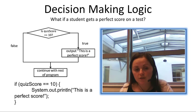What this would look like in code is: if quiz score equals 10, system.out.println, 'this is a perfect score'. You will see the syntax here of an if statement, just a simple if statement.